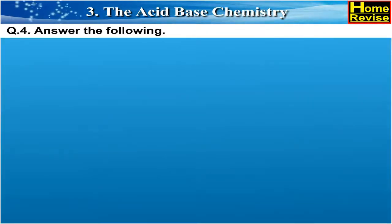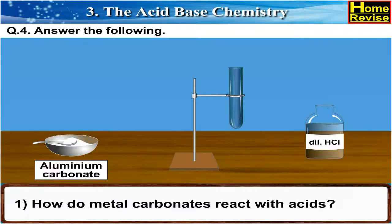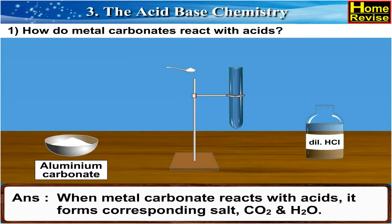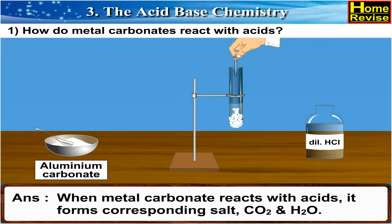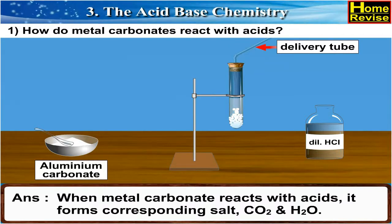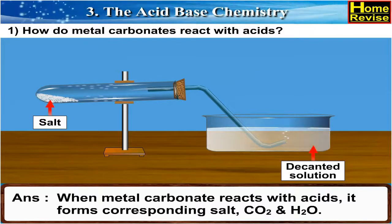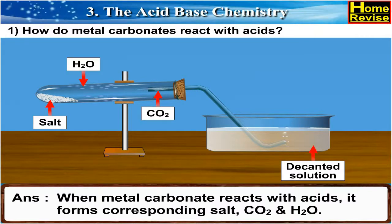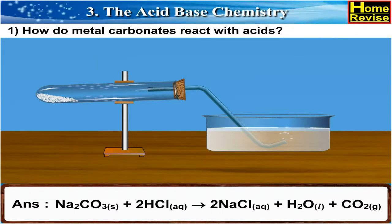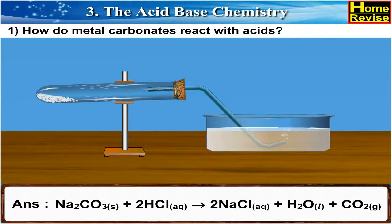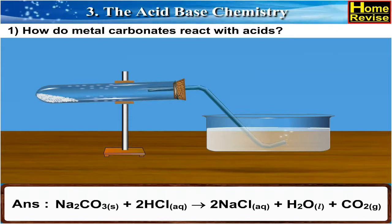Answer the following. Question 1: How do metal carbonates react with acids? When metal carbonate reacts with acids, it forms the corresponding salt, CO2 and H2O. For example: Na2CO3 (solid) + 2HCl (aqueous) gives 2NaCl (aqueous) + H2O (liquid) + CO2 (gas).